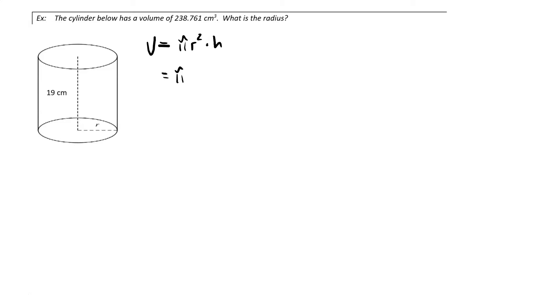So we've got pi times the radius squared, which we don't know, times the height, which we do know, and we're told that the volume is 238.761.